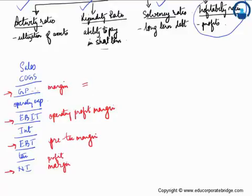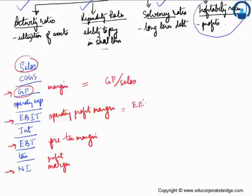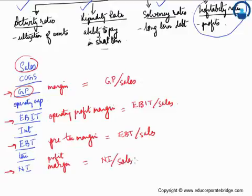The formulas associated with these margins — we have already looked at vertical analysis where we divided each individual item by sales. So margins here would be: gross profit divided by sales; operating profit is EBIT divided by sales; pre-tax margin is earnings before taxes divided by sales; and the profit margin is net income divided by sales. Obviously, the higher the number, the better it is for the company.